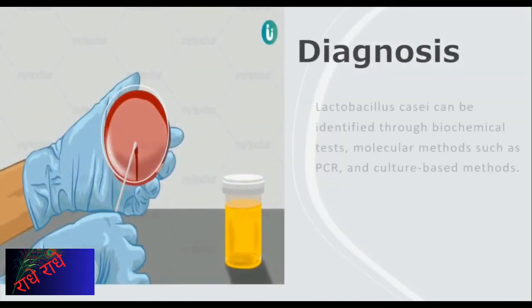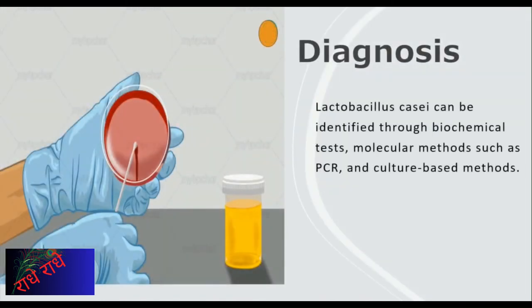Biochemical tests, molecular methods such as PCR, and culture-based methods can all be used for diagnosing Lactobacillus casei. These tests can be used to determine the presence of the strain of bacteria in specimens and samples. Furthermore, culture-based methods can be used to isolate and identify the Lactobacillus casei strain.